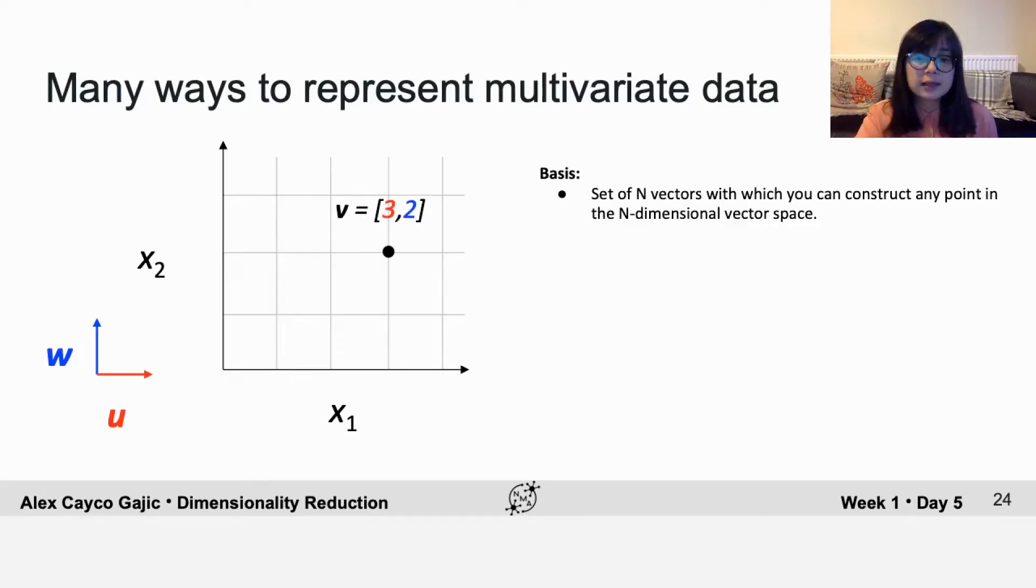So when we say that this point here is equal to 3, 2, what that really means is that we can represent it as a combination of three times the vector u plus two times the vector w.